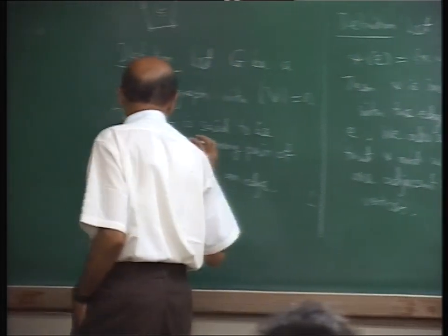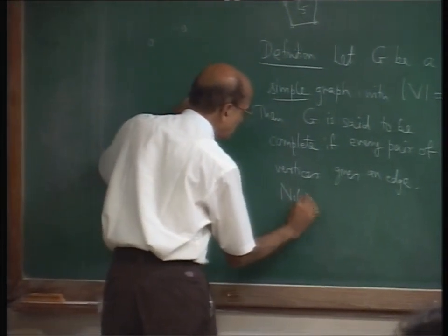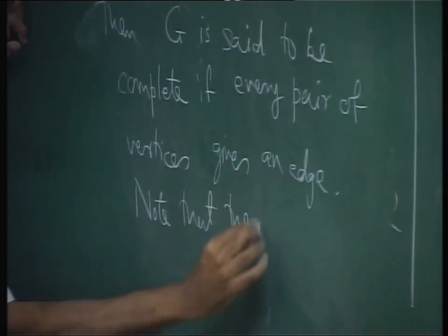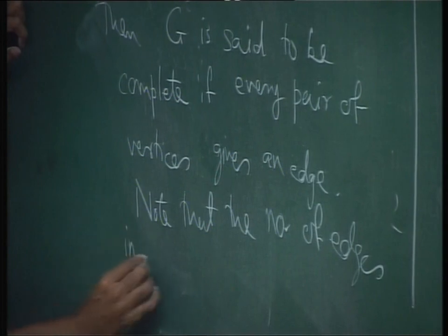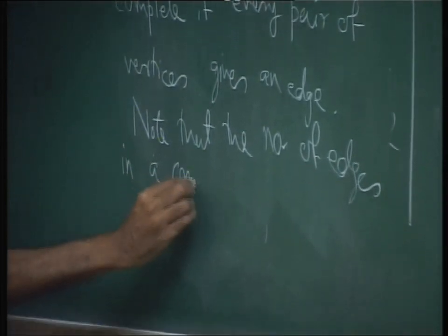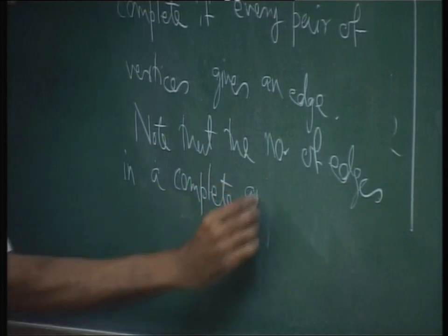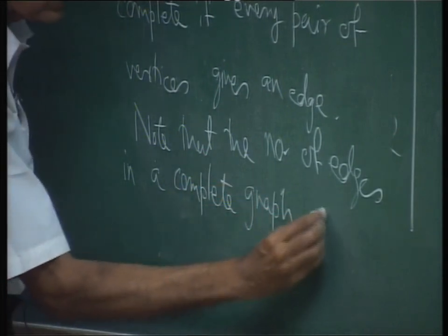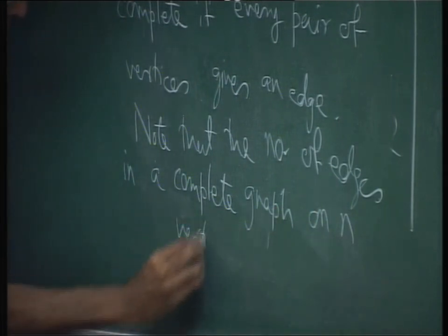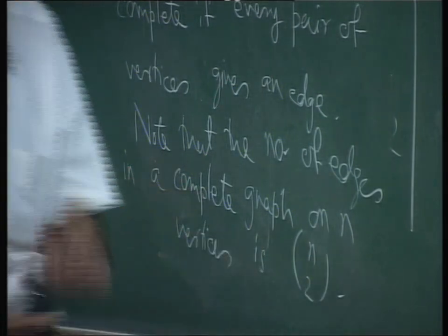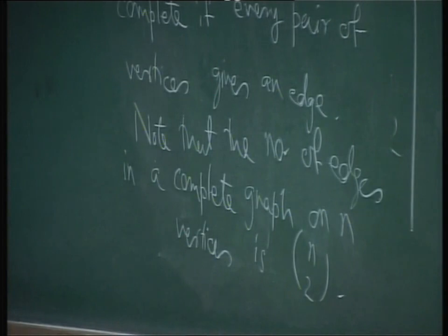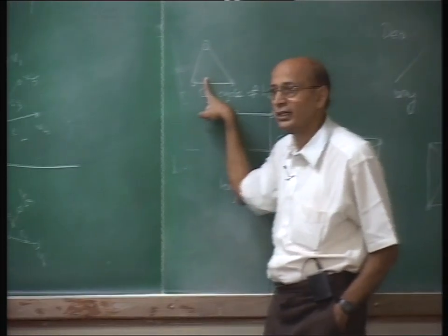How many edges would a complete graph have? NC2 — n choose 2. That is clear. So the number of edges of a complete graph on n vertices is n choose 2.